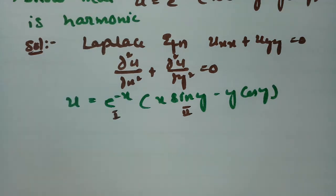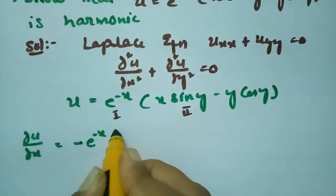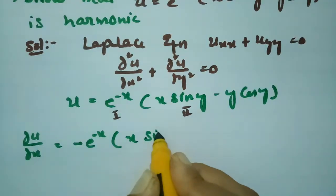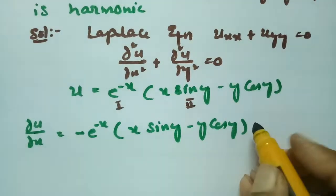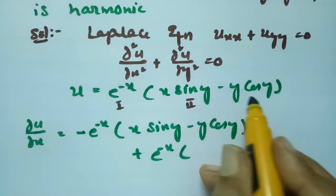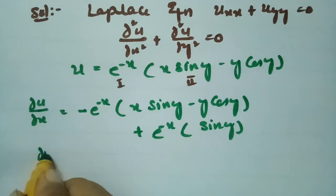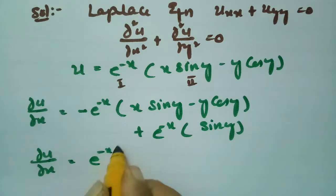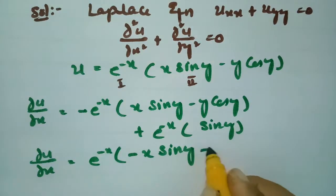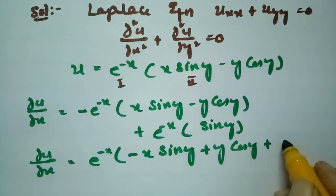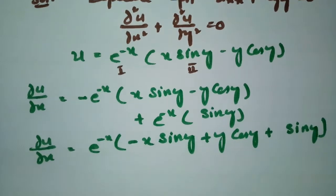So ∂u/∂x: the derivative gives us −e^(−x) times (x·sin(y) − y·cos(y)), and then we leave the first function and differentiate the second with respect to x, giving sin(y). Taking e^(−x) common, this becomes e^(−x) times (−x·sin(y) + y·cos(y) + sin(y)).